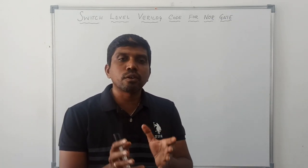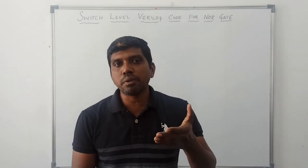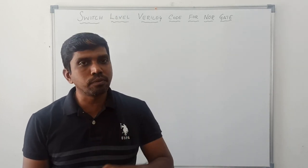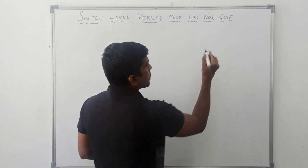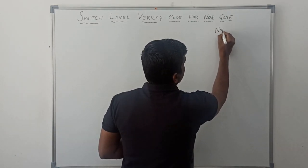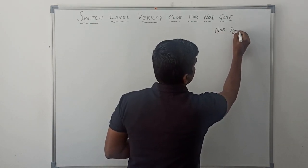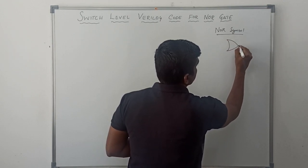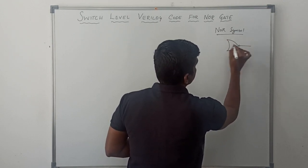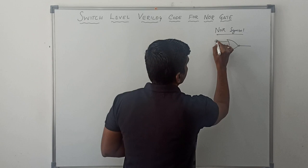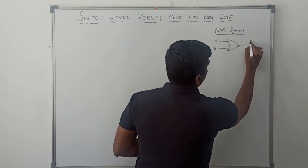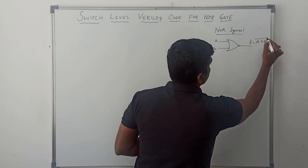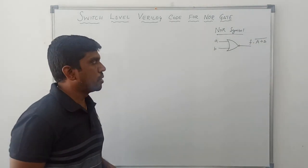Before writing the code, first I draw the symbol of NOR gate, and that symbol is converted into a transistor level circuit, afterwards I write the code. So, it is a two input NOR gate. Inputs are A and B, output is F. The corresponding boolean expression is A plus B, the whole bar.